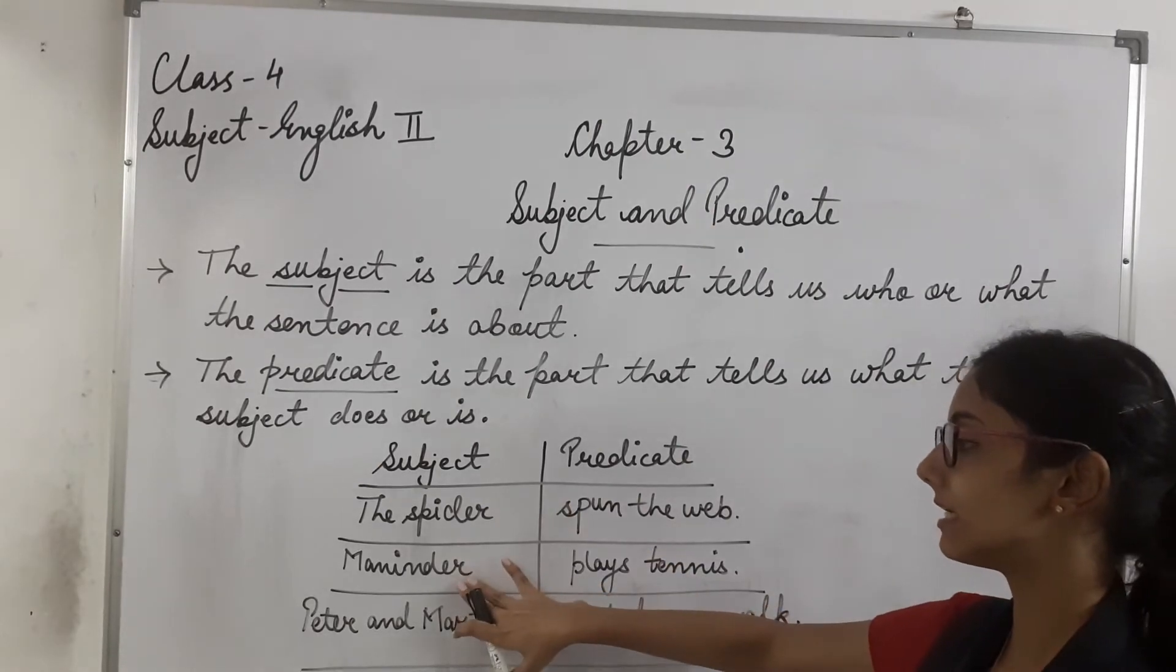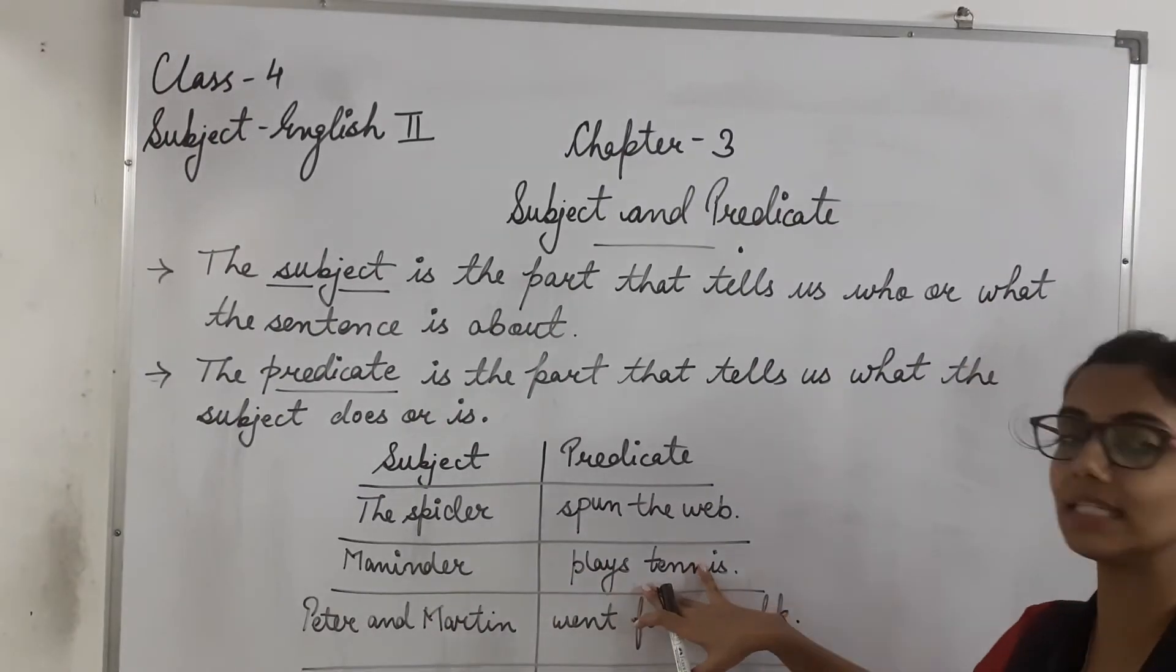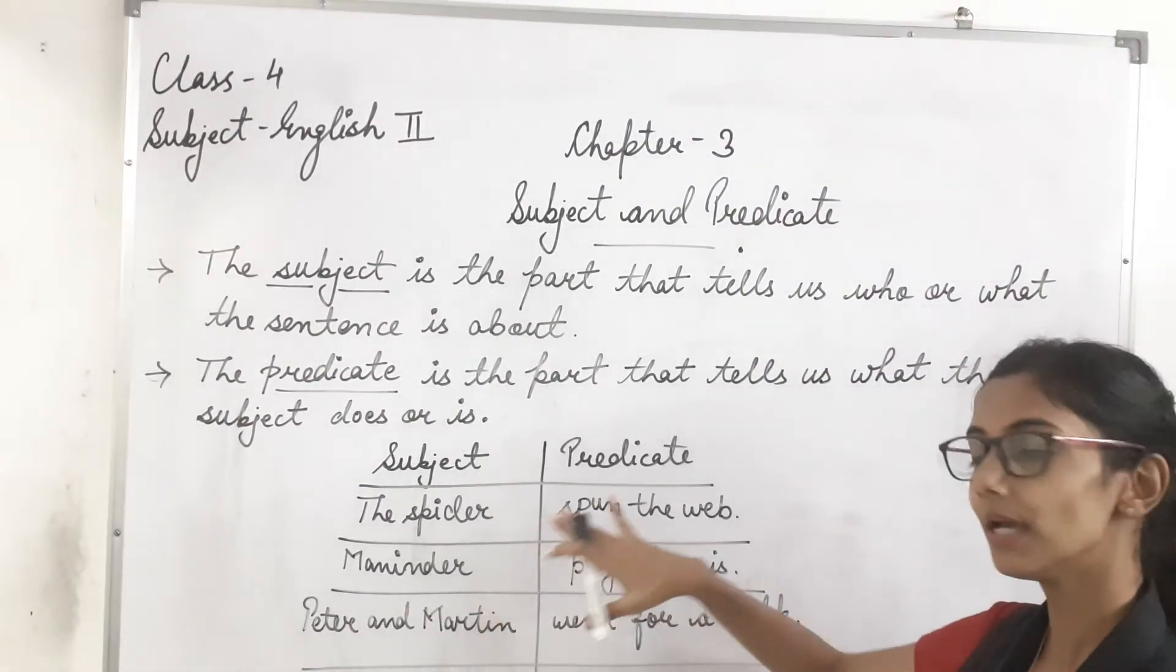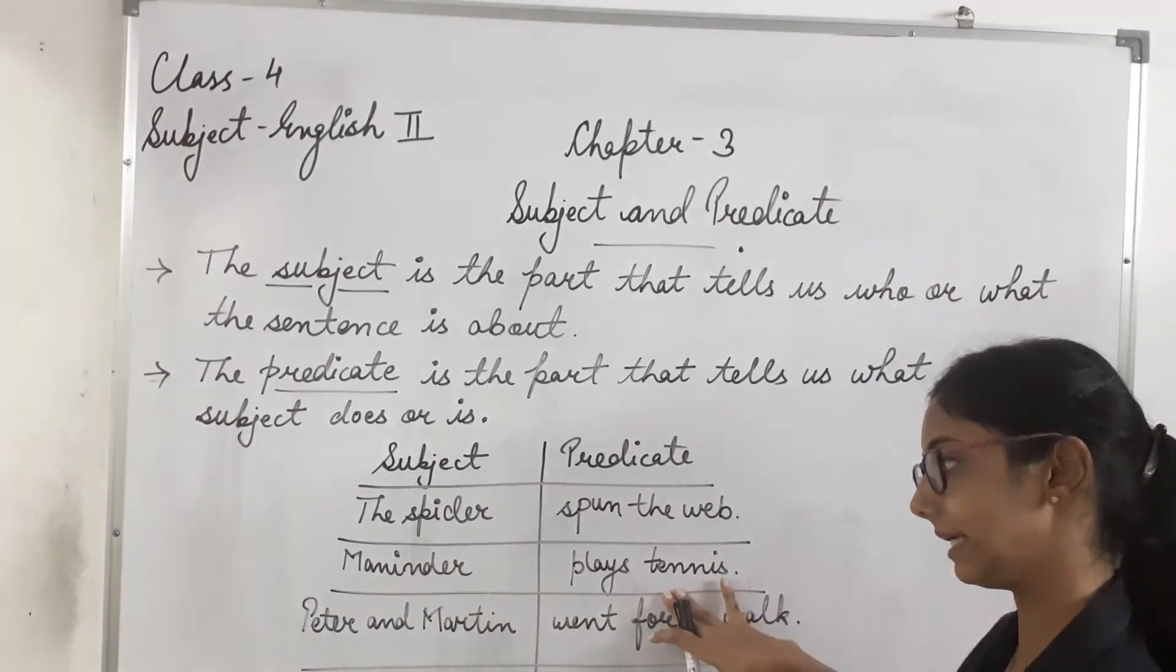In next sentence, Maninder plays tennis. Maninder is our subject and plays tennis is our predicate. Kyunki is sentence maninder ke baare me baat ho rhea hai. And what he is doing? He is playing tennis. That is our predicate.